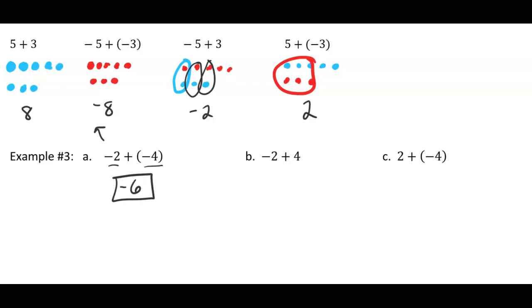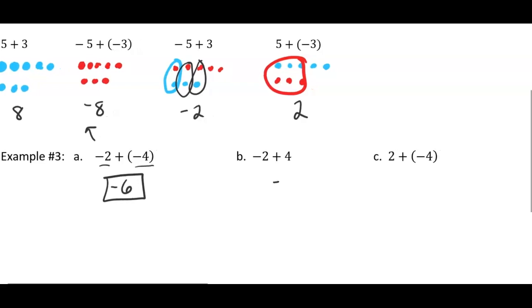Now I have negative two chips, so two red chips, but I'm bringing in four blue chips. So I've got more blue chips, so I'm going to have a positive, and it's going to be two.